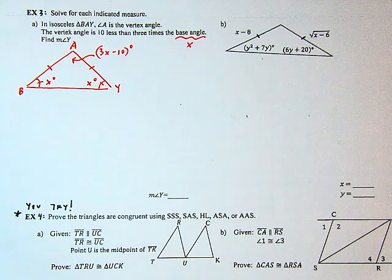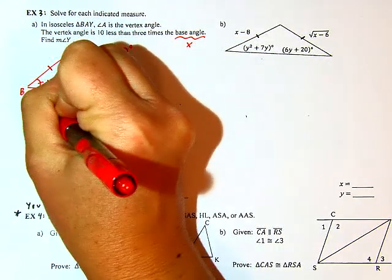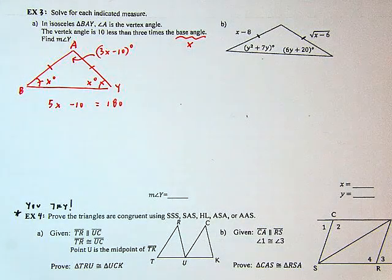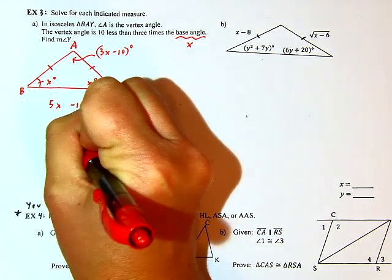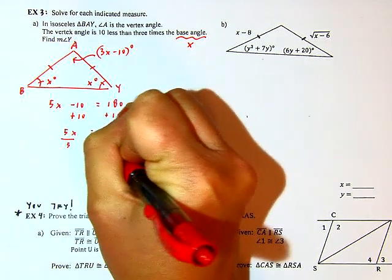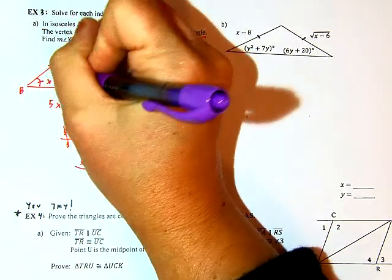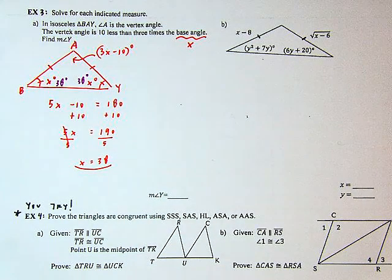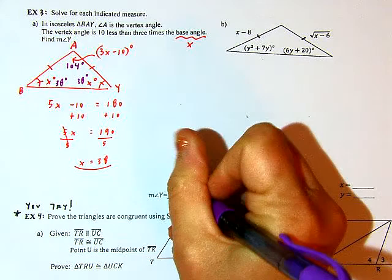I've defined all my angles. Building an equation: adding my X terms gives me 5X. So 5X minus 10 has to sum to 180, because every triangle's angles add to 180. Adding 10: 5X equals 190. Dividing by 5: X equals 38. So the two base angles measure 38 degrees. The vertex angle is 3 times 38 minus 10, which is 114 minus 10 equals 104 degrees. The measure I wanted was Y, so my final answer is 38 degrees.